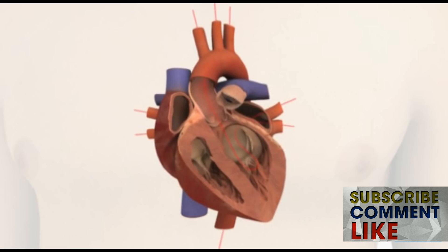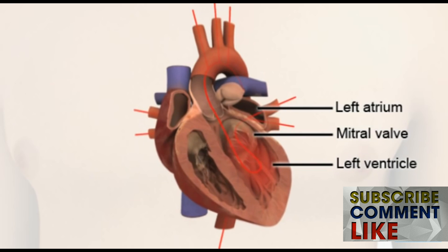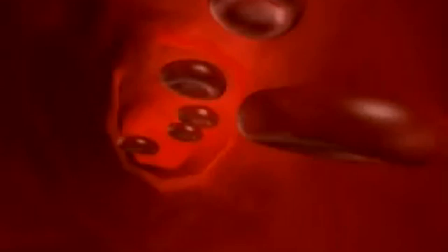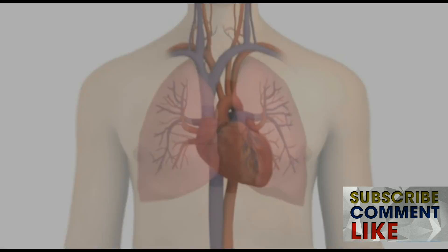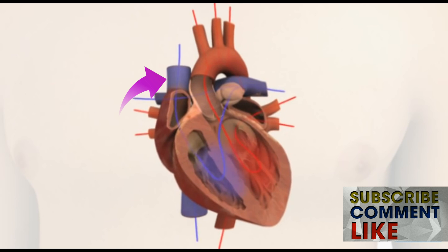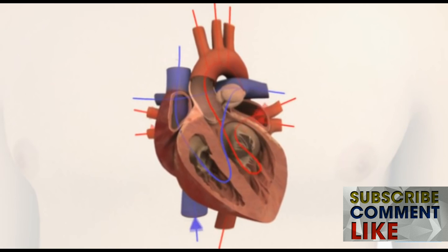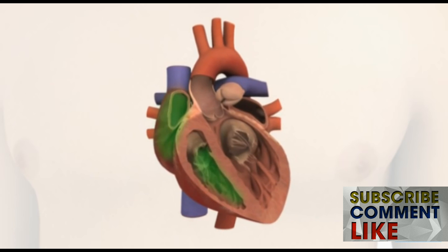The systemic loop begins when oxygen-rich blood coming from the lungs enters the left atrium. As the chamber fills, it presses open the mitral valve and blood flows down into the left ventricle. When the ventricles contract during a heartbeat, the blood on the left side is forced into the aorta — about an inch wide — which delivers oxygen to all the body's cells through smaller arteries and capillaries. Used blood from the body returns to the heart through the veins, eventually collecting into the superior vena cava from the upper body and the inferior vena cava from the lower body, both emptying into the right atrium.